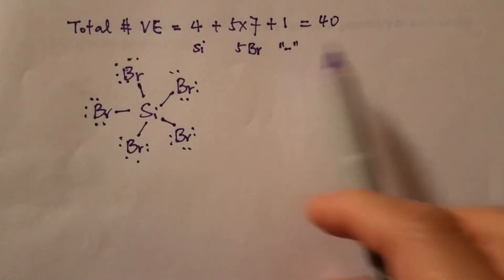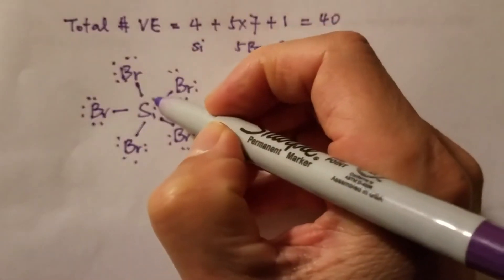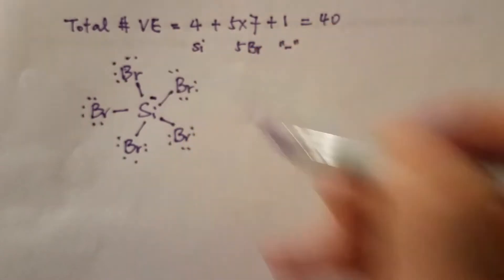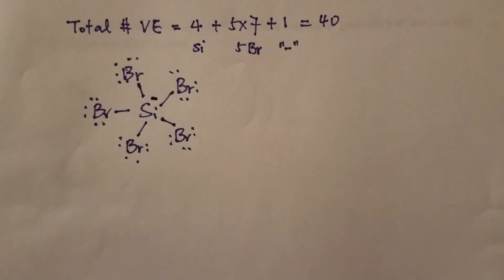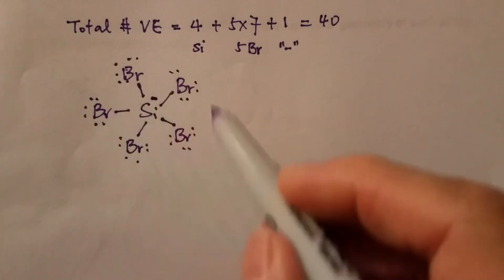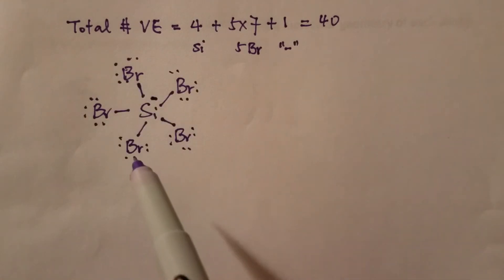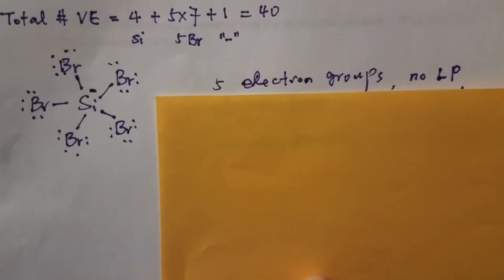Then where does that negative one sign go? If you work on formal charges, you will find out it's actually here for silicon. All the others for bromine, the five bromines, they all carry formal charge of zero.